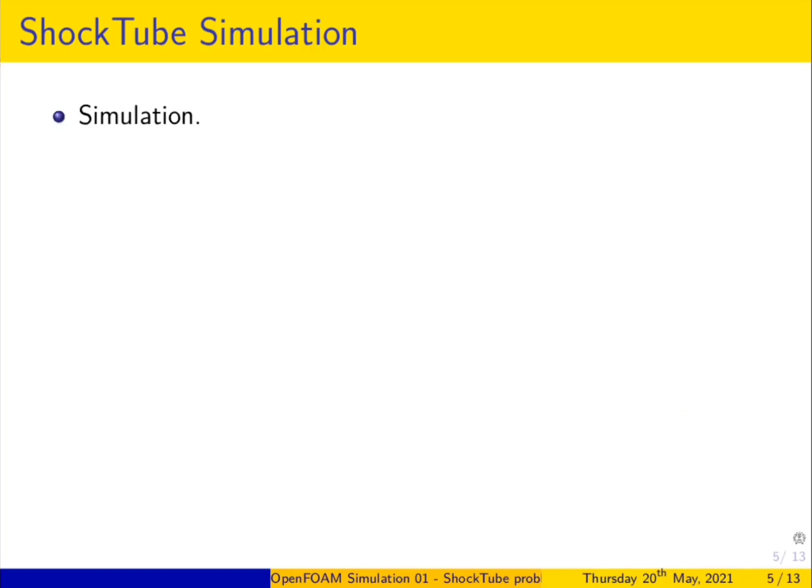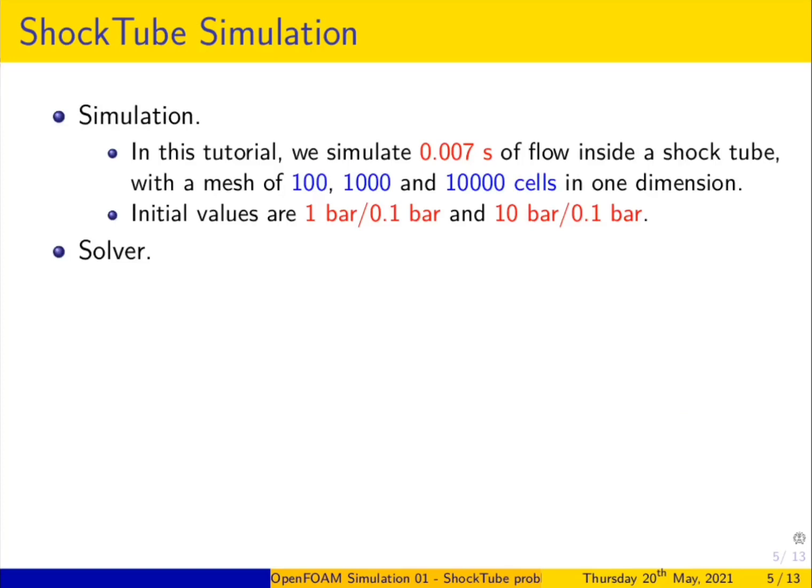In this shock tube problem, we simulate seven milliseconds of flow inside a shock tube with three different meshes: the first mesh is 100 cells, the second is 1000 cells, and the third is 10,000 cells in one dimension. The problem is one-dimensional, meaning only in the X direction we increase the cells and observe the change in results. This is called a mesh independence test or grid resolution study. In the Y and Z directions, we keep the mesh without change.